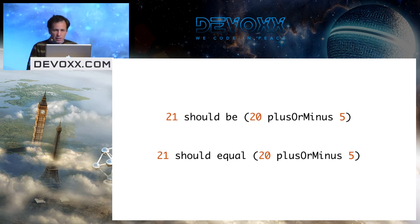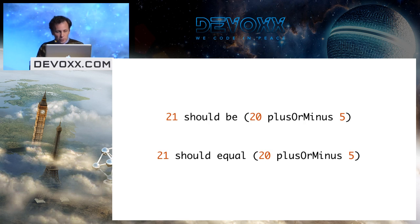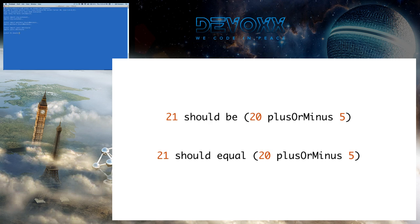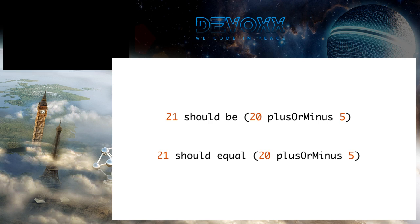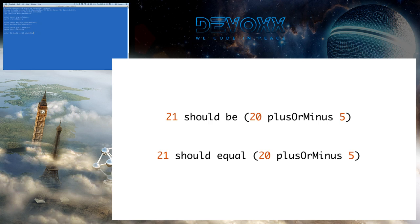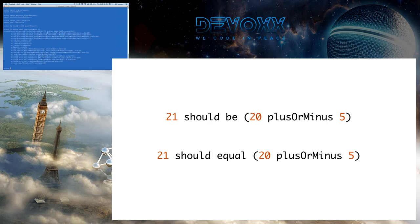Here's an example where I complain about my own design. These are two things you can say in ScalaTest. If I say `21 should be 20 plusOrMinus 5`, it does what you'd expect — no test failure. But if I change that to `should equal`, which looks like it should work, it actually fails.